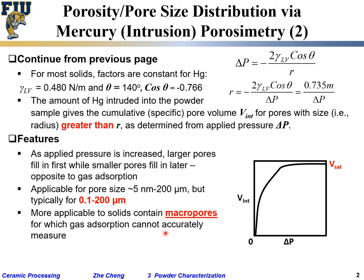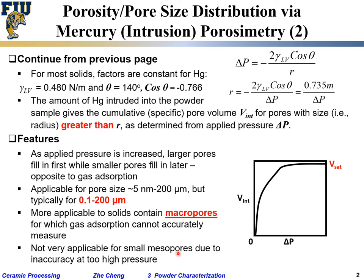Mercury porosimetry and gas absorption complement each other. Gas absorption doesn't work well for pores larger than about 15 nanometers — it's almost as if it's a flat surface at that point — but mercury porosimetry can measure those easily. Conversely, mercury porosimetry is not very applicable to very small pores like micropores, because you would have to apply extremely high pressure, which becomes mechanically difficult and may cause your container or material to fail.